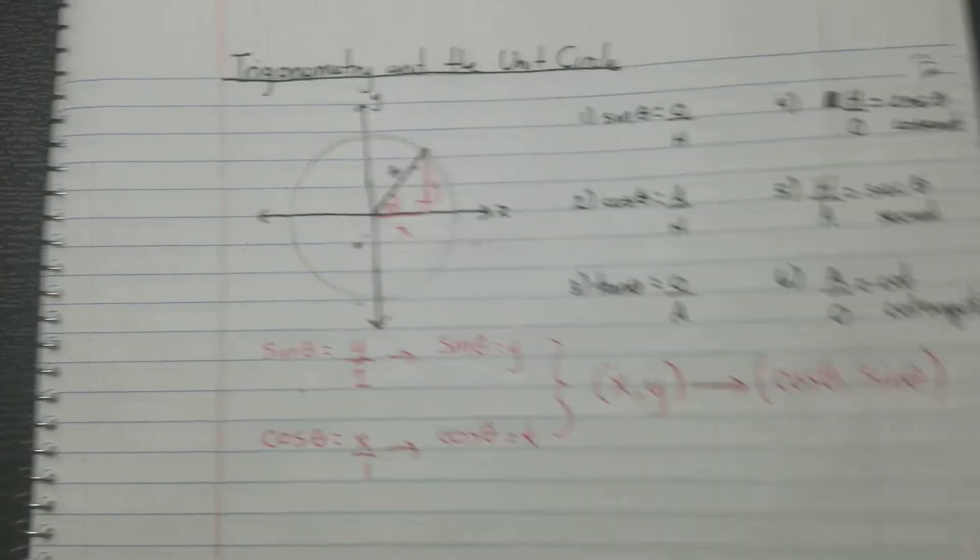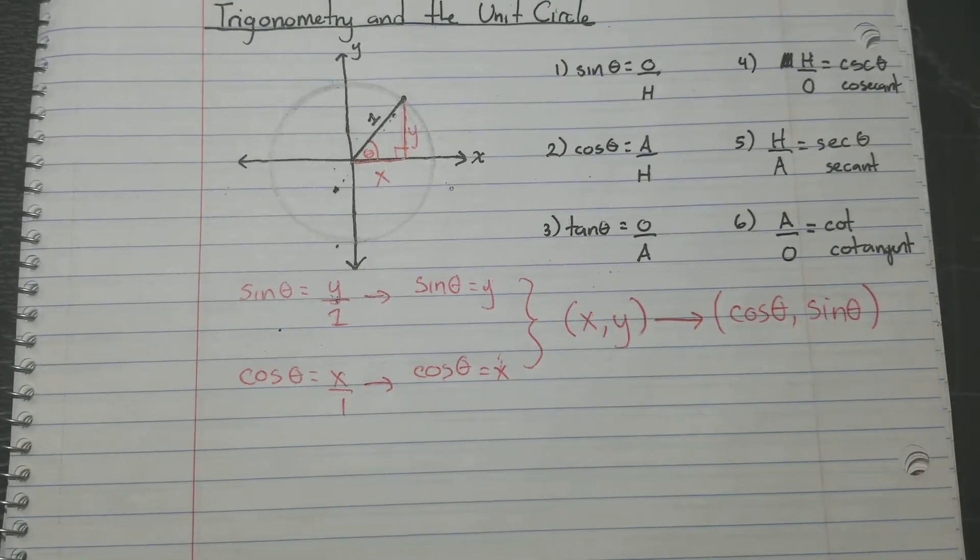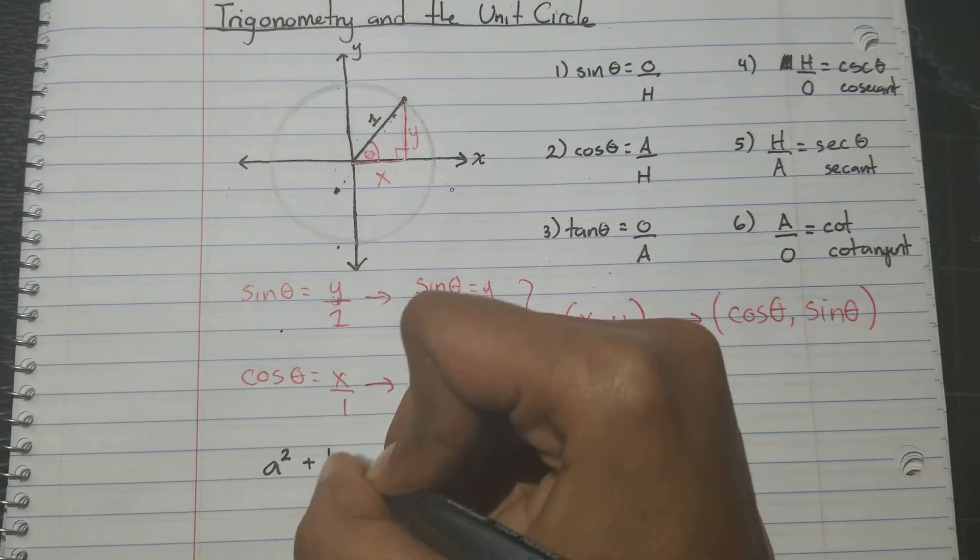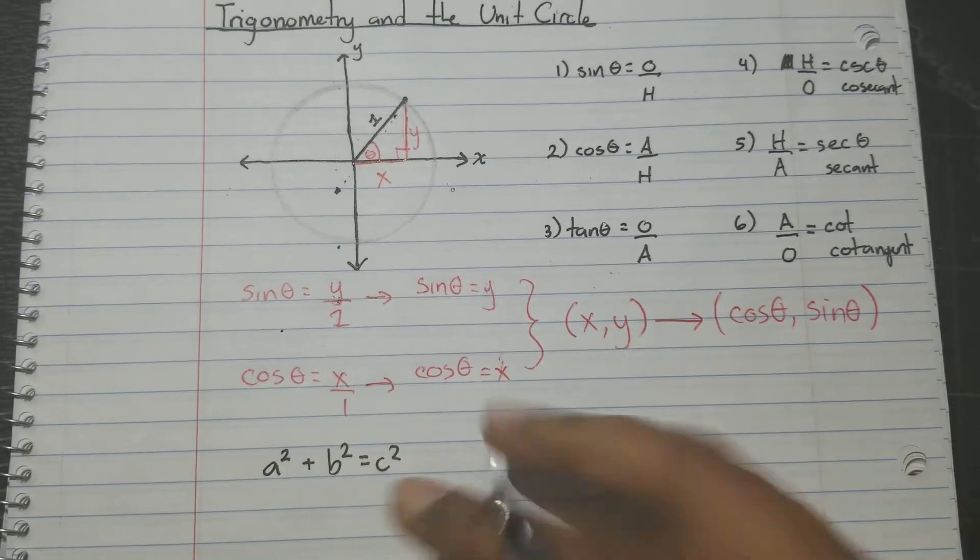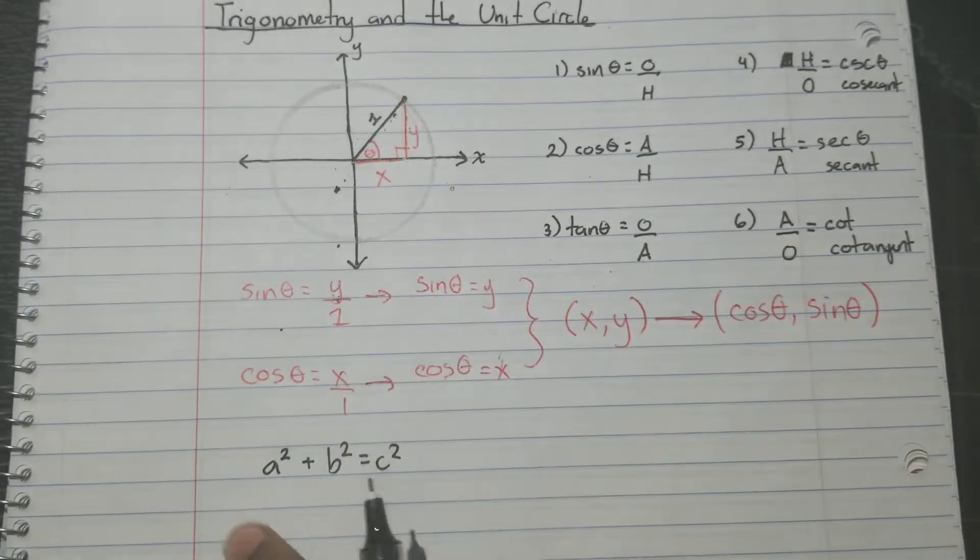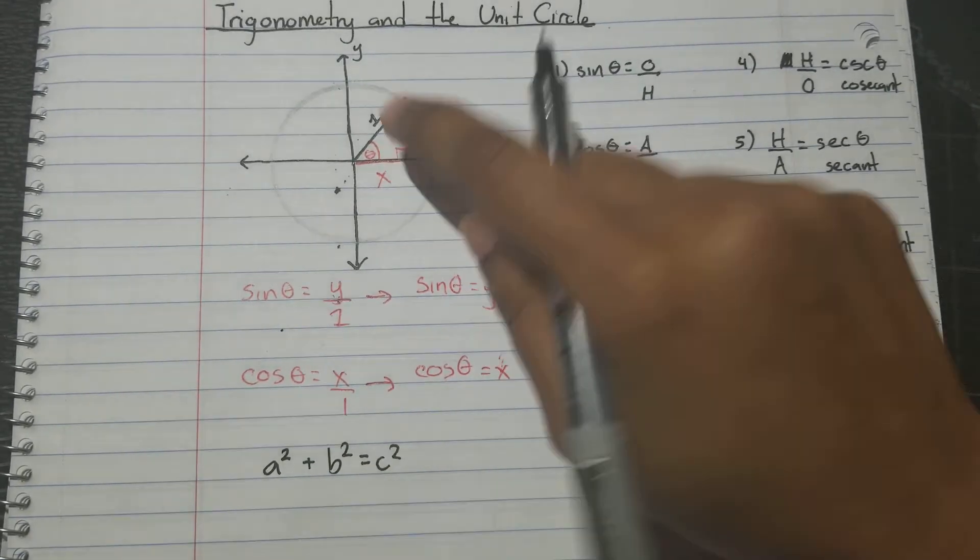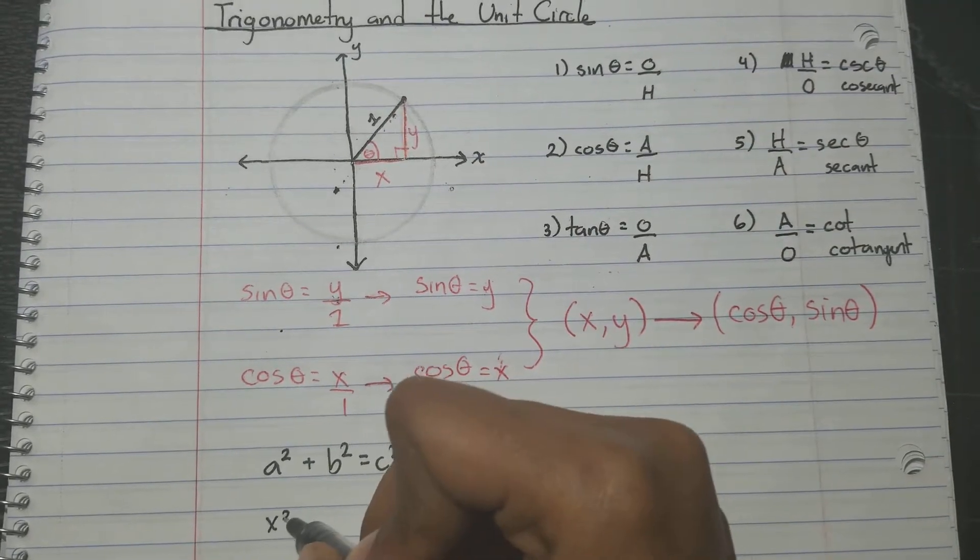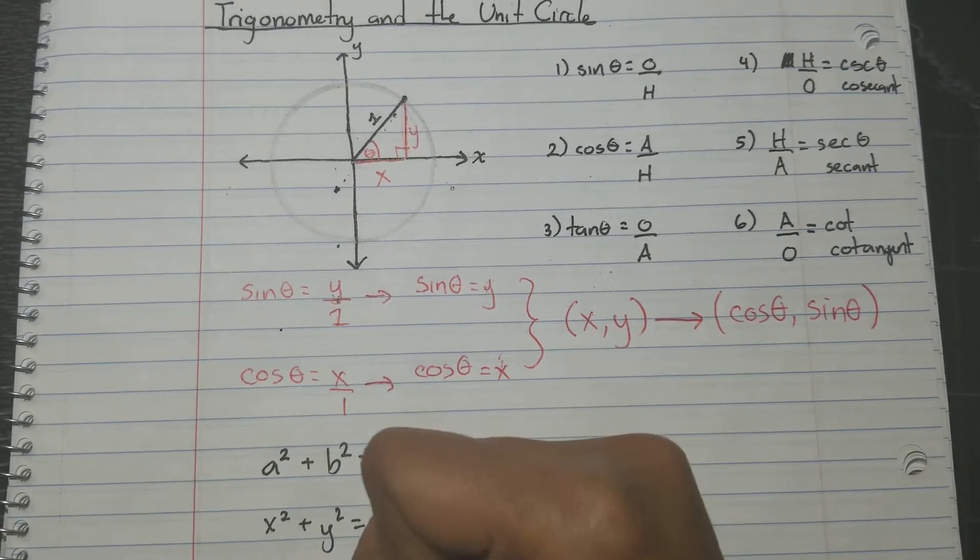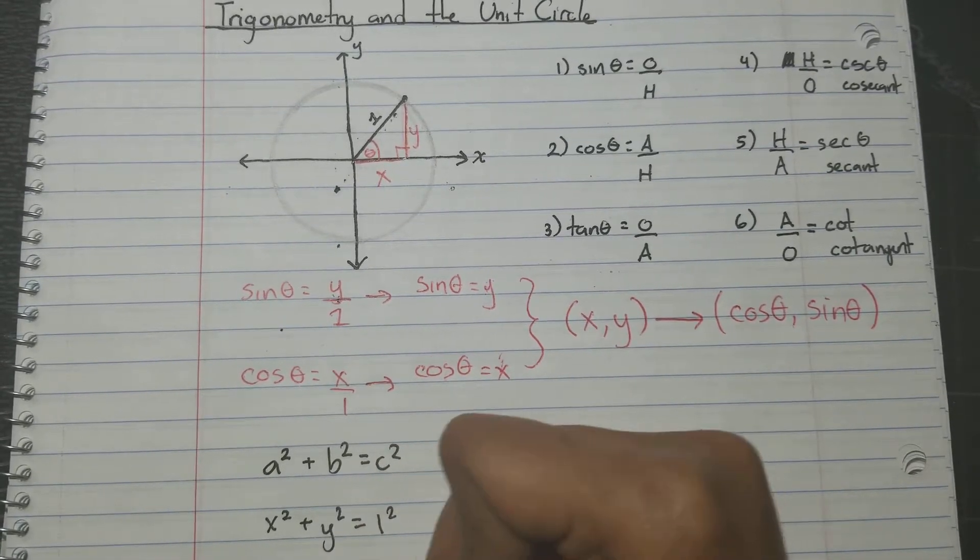And let's finish up one more with the Pythagorean theorem. Now, we remember Pythagorean theorem being a squared plus b squared equals c squared. And if we were just using the regular coordinate plane, we would just do x squared plus y squared equals one squared. So x squared plus y squared equals one.